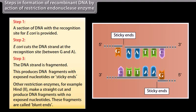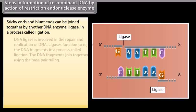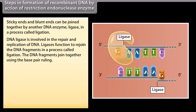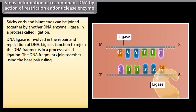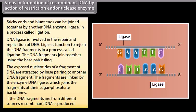Other restriction enzymes, for example HindII, make a straight cut and produce DNA fragments with no exposed nucleotides. These fragments are called blunt ends. Sticky ends and blunt ends can be joined together by another DNA enzyme, ligase, in a process called ligation. DNA ligase is involved in the repair and replication of DNA. Ligases function to rejoin the DNA fragments. The exposed nucleotides of a fragment of DNA are attracted by base pairing with another DNA fragment. The fragments are linked by the enzyme DNA ligase, which joins the fragments at their sugar-phosphate backbones. If the DNA fragments are from different sources, recombinant DNA is produced.